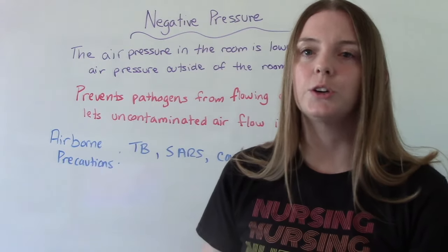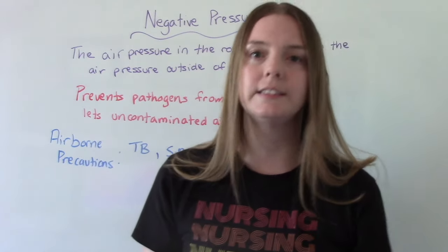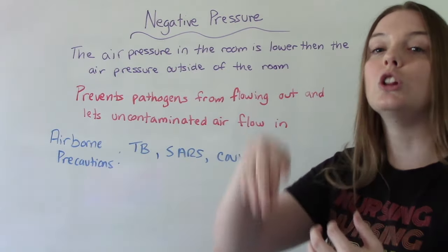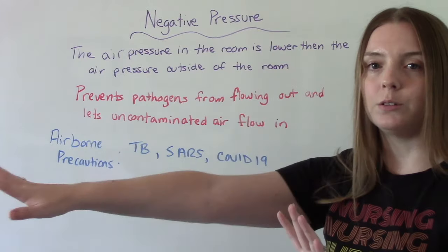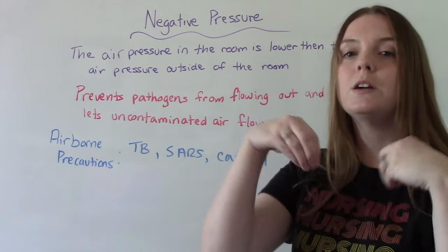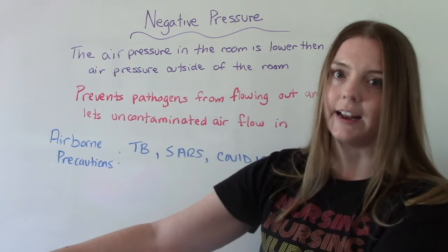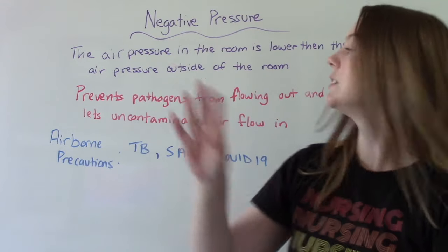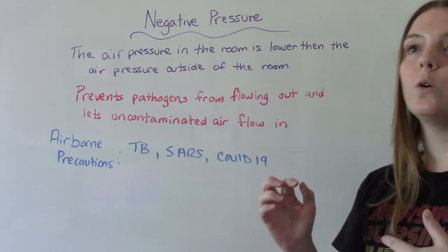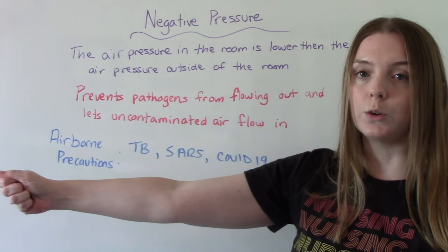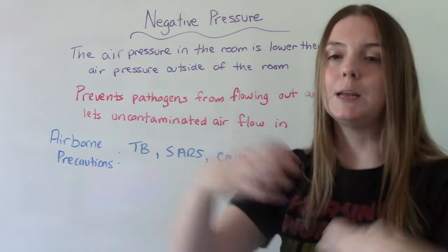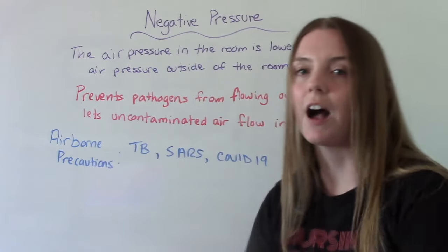Starting with negative pressure — why is it called that? Where do these names come from? The air pressure inside the patient's room is lower than the air pressure outside, in the hallway, at the nurse's station, on the rest of the floor. The air pressure in the room is lower than the outside air, and this helps to prevent pathogens from flowing out. When you open the door to that patient's room, it kind of causes the air pressure to trap the pathogens in, keeping them from wanting to leave and go to that area of higher pressure.